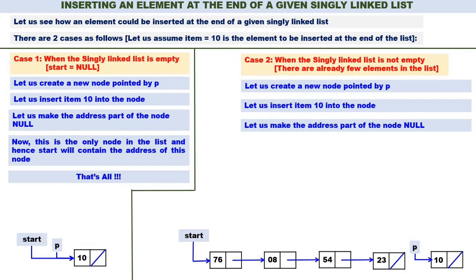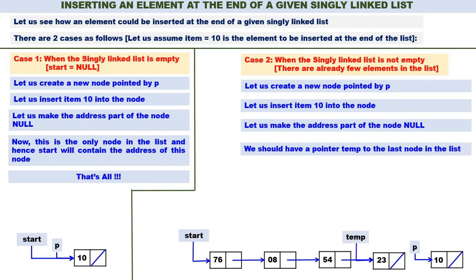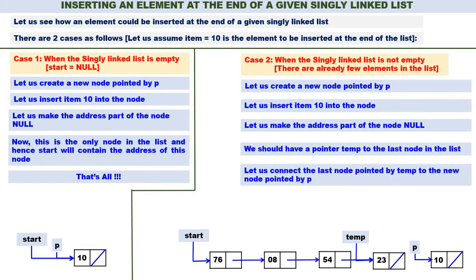To connect the last node of the existing linked list to P, you require a pointer to the last node. So we should have a pointer temp to the last node in the list. Temp is containing the address of the last node. Now, temp->next should be connected to the new node — that is, temp->next = P. Let us connect the last node pointed by temp to the new node pointed by P. The new node pointed by P, that is 10, is inserted at the end of the linked list. 23 was the last node; now 10 is the last node.